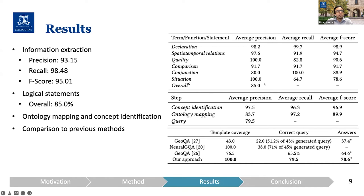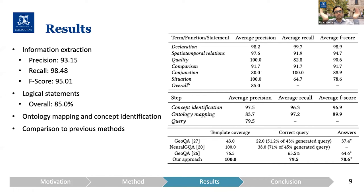The logical statements are overall 85% accurate, compared to manually generated logical representations. In general it is highly accurate, but for conjunctions it is a bit lower and less precise. That's because if we have a conjunction, we apply the same operations to both sides, and any error in the spatial relationship will be propagated through the conjunction as well.